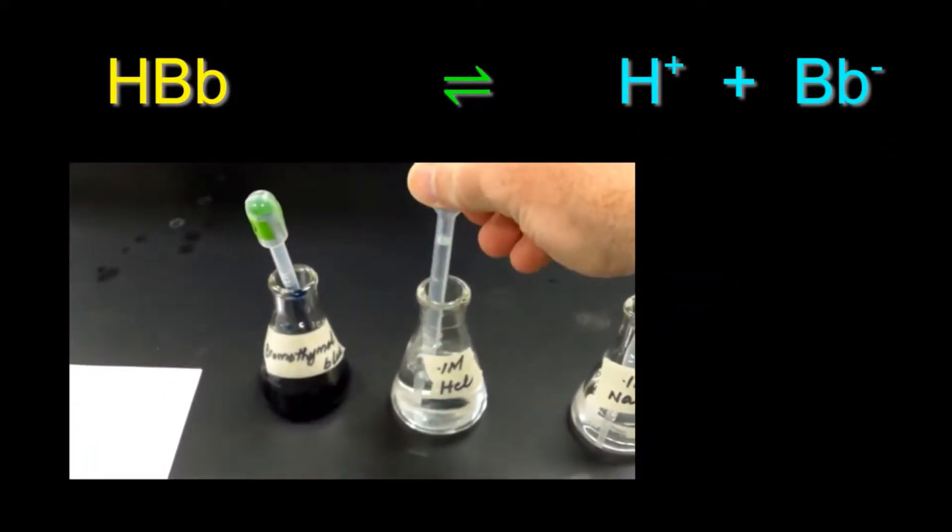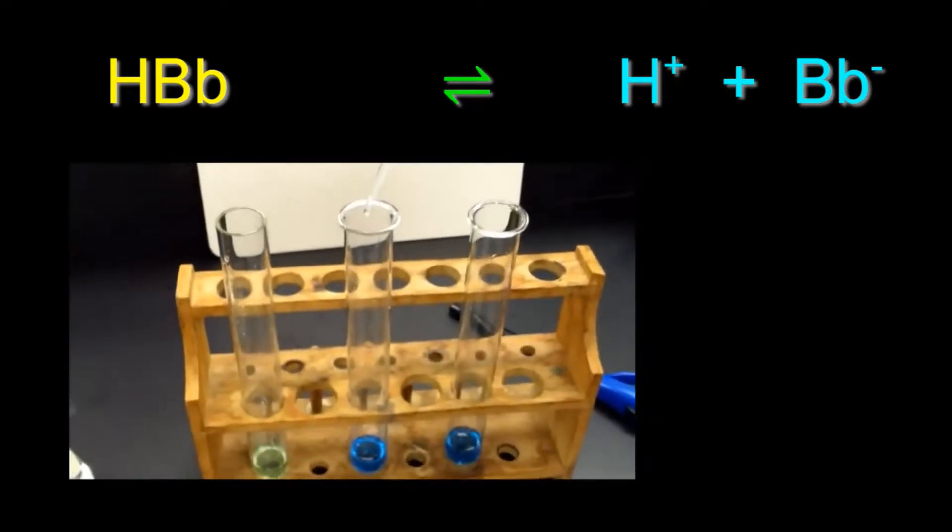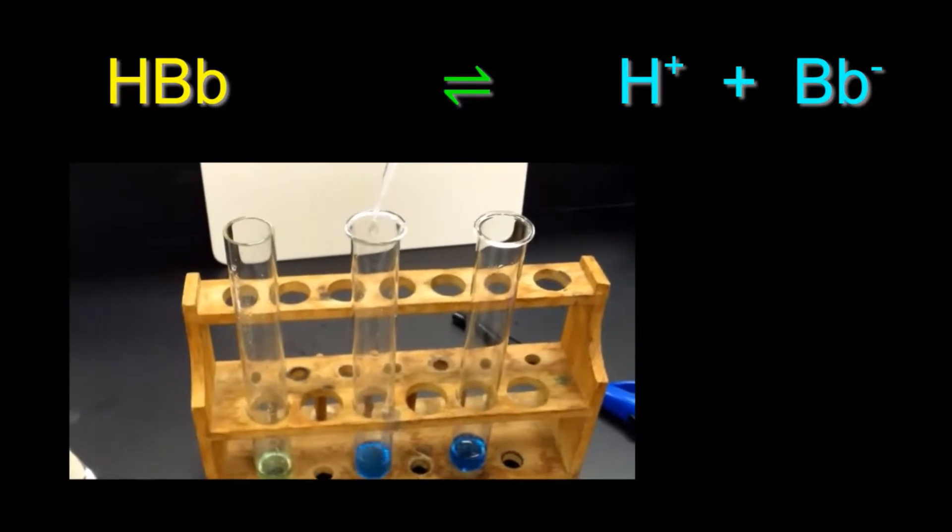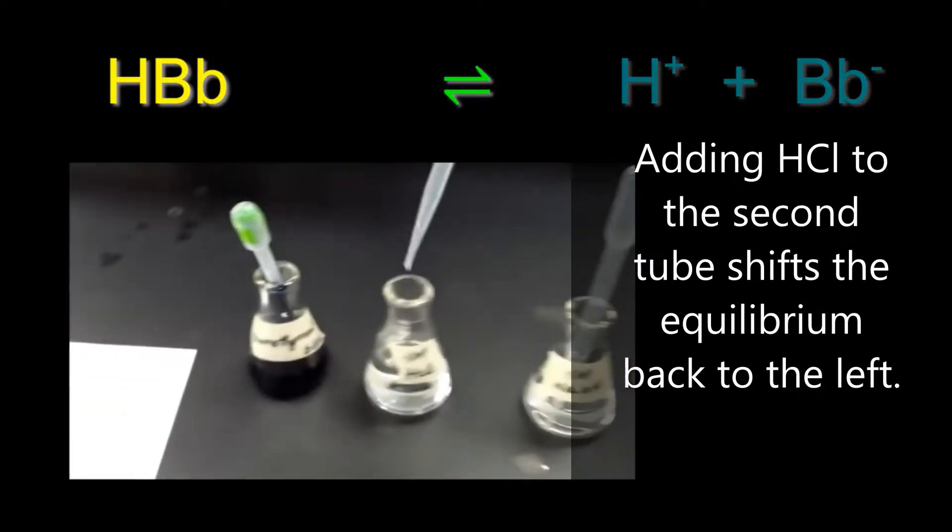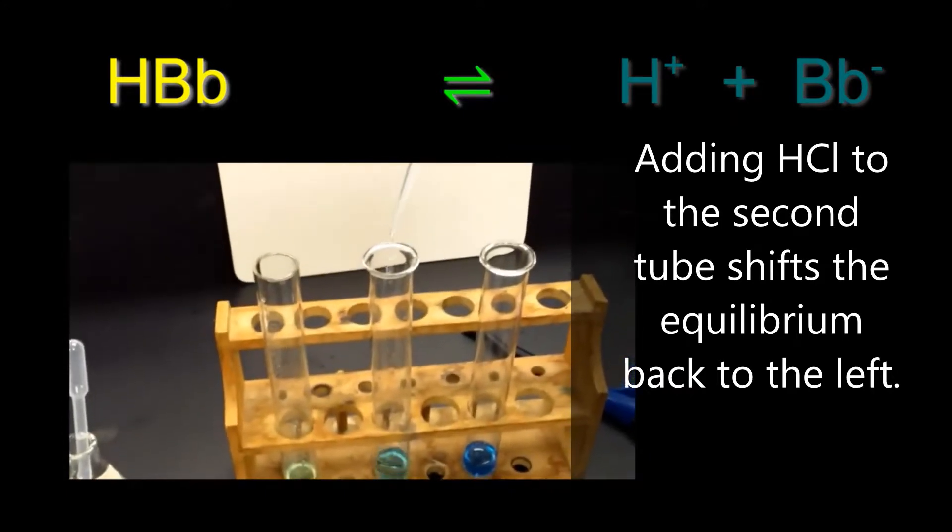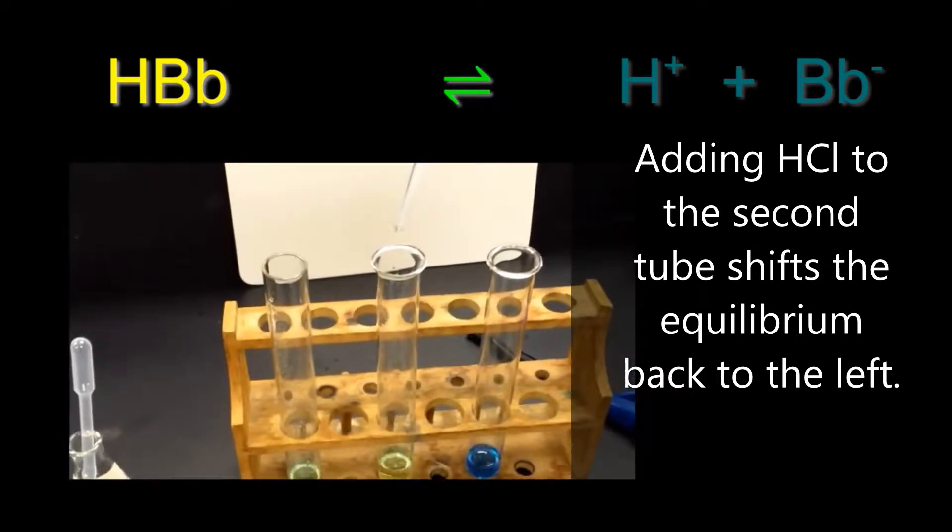If we add hydrochloric acid back into the second test tube, if we add enough, so we'll need to add a little bit here, plus a little bit more, we should see that the color will turn back to yellow because the equilibrium position is being shifted back.